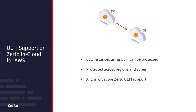For Zerto in Cloud for AWS — which replicates EC2 instances between zones or regions — we can now replicate and protect UEFI instances across multiple regions and zones. This brings parity with our core Zerto product for replicating from VMware into AWS. Many customers who migrate or protect VMs into AWS then want to use Zerto in Cloud for AWS to protect those machines across regions, and that wasn't fully possible until this release.